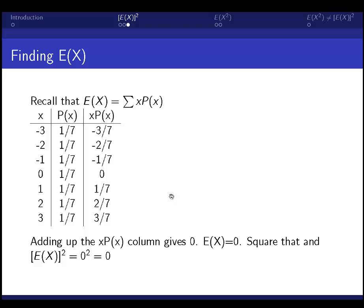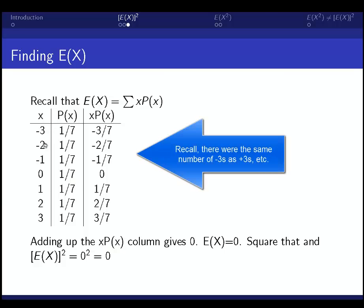So the expected value of x is 0. And you might think that makes sense if you have all these negative 3s canceling the positive 3s. Negative 2 cancels positive 2. Negative 1 cancels 1. You end up with 0.